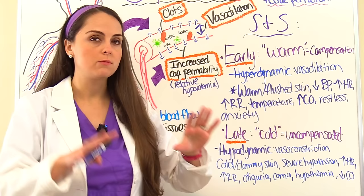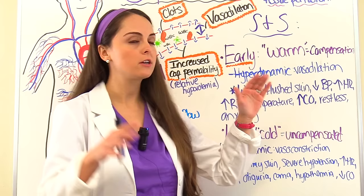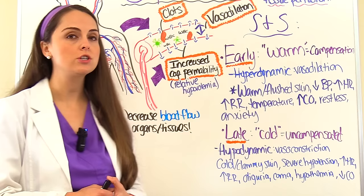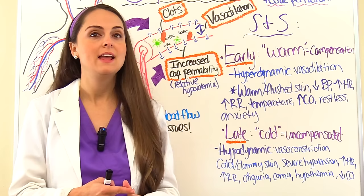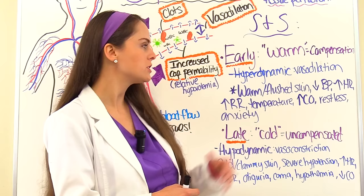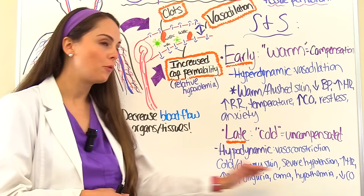Later on, in the late stages, the skin will be cold and clammy. In the early stage, blood pressure is low, heart rate is up, and respirations are up. The patient will also have a fever. So if you see a patient with a fever, low blood pressure, elevated heart rate, rapid breathing, and warm flushed skin — they're likely septic. Cardiac output is normal or high in this stage, and mental status will show restlessness and anxiety.